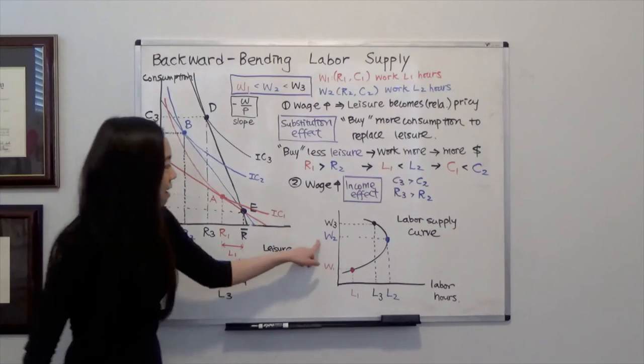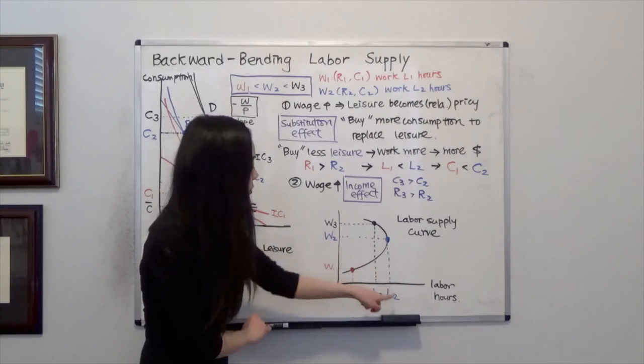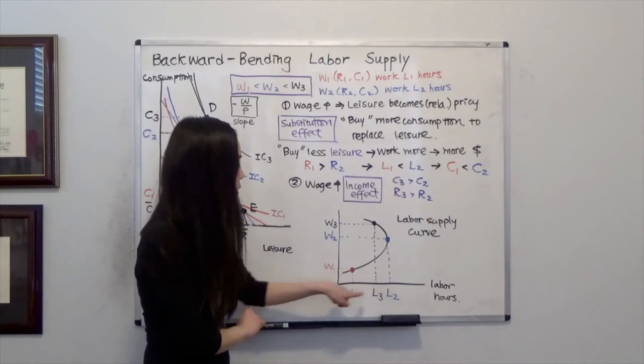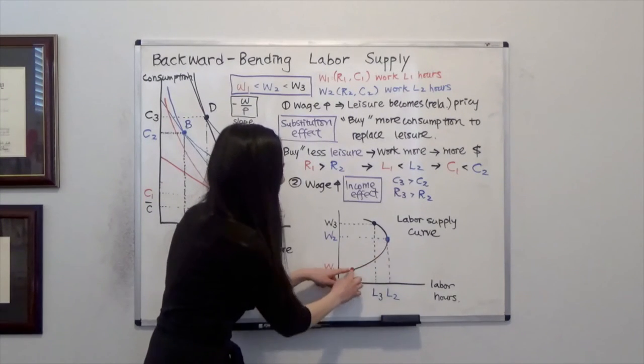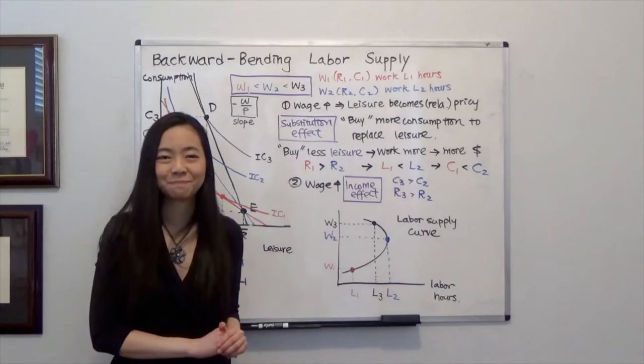So, on your labor supply curve, you can see that at wage level W2, you are going to work more hours. You're going to work L2 hours. And therefore, at this point, your labor supply curve is still positively sloped.